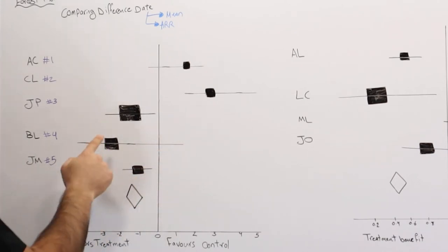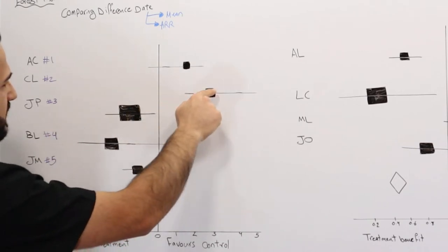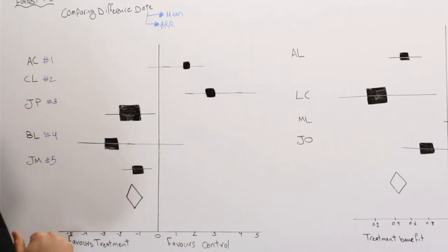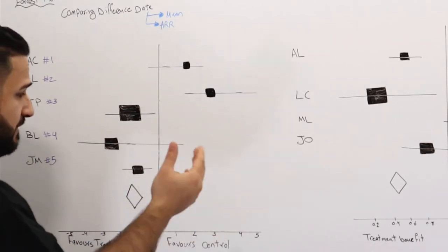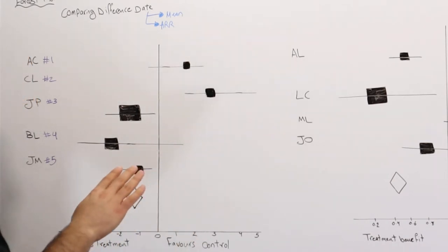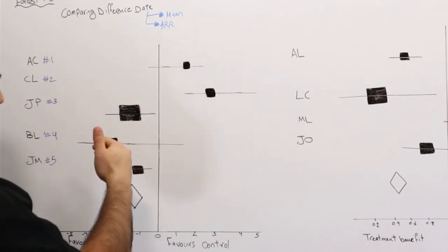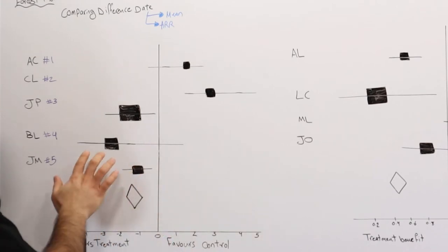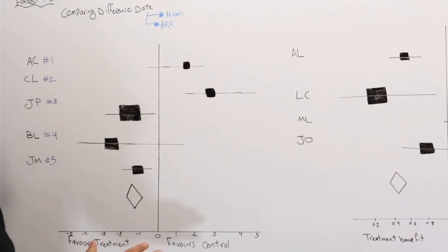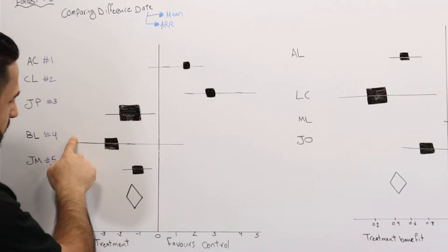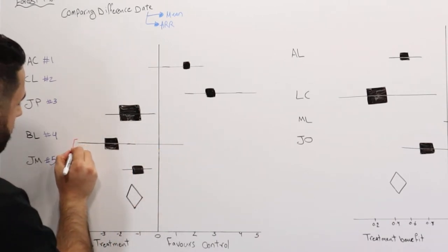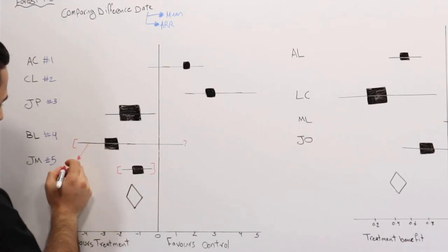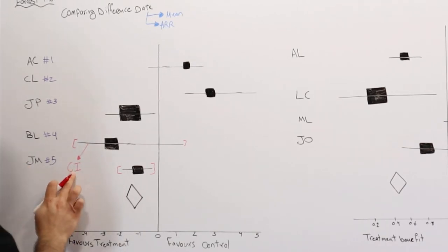The line crossing through the middle of each square represents the confidence interval, which in forest plots is typically 95%. Different lines have different lengths, and each length represents that study's confidence interval.